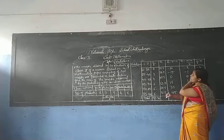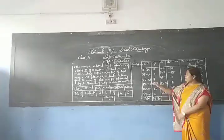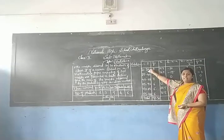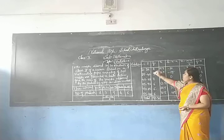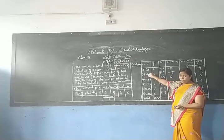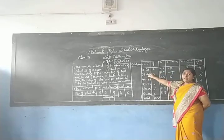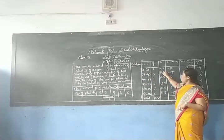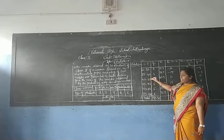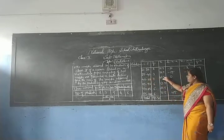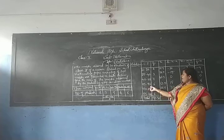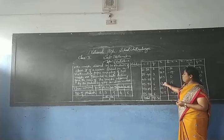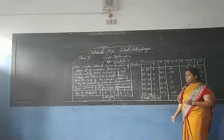For xi, we take the class mark, which is (upper limit + lower limit) divided by 2. So: (10+25)/2 = 17.5, (25+40)/2 = 32.5, (40+55)/2 = 47.5, (55+70)/2 = 62.5.